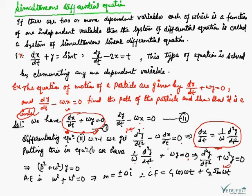Now we need to solve this equation. This is equation 3. To solve equation 3, we can write (D² + ω²)y = 0. Therefore, the auxiliary equation is m² + ω² = 0.